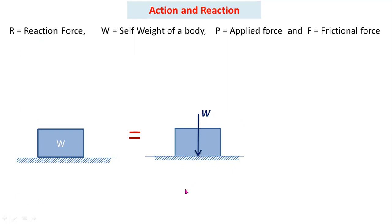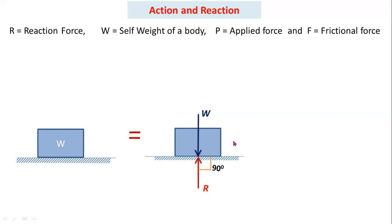This is the action. From Newton's third law of motion, for every action there is an equal and opposite reaction, so you have to draw the opposite reaction force. Capital R is the reaction force. Reaction force always makes an angle of 90 degrees with respect to the support. These two form the free body diagram.